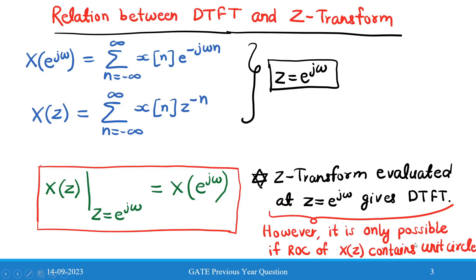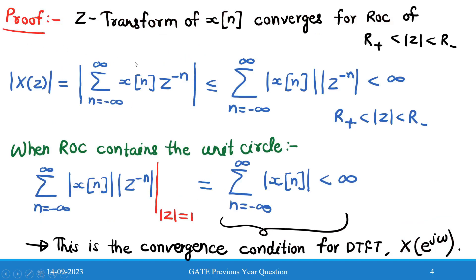Now we will prove this statement. The convergence condition for Z-transform is: let the Z-transform of x[n] converge for ROC given by r₊ < |z| < r₋. We can write |X(z)| = |summation of x[n] · z^(−n)|, which must be less than or equal to the summation of |x[n]| · |z|^(−n), and this whole expression must be less than infinity.